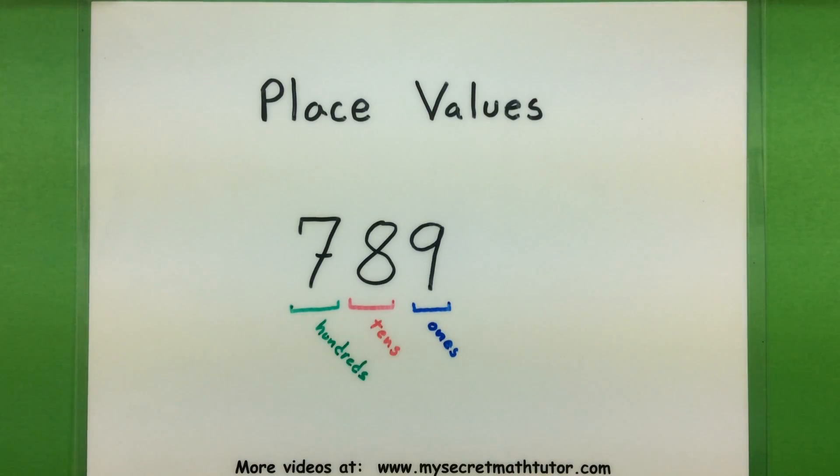For example, if I have the number 789, I'm essentially describing how big of a number I have because I'm describing how many hundreds, tens, and ones are in that number.